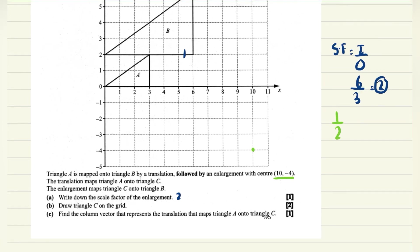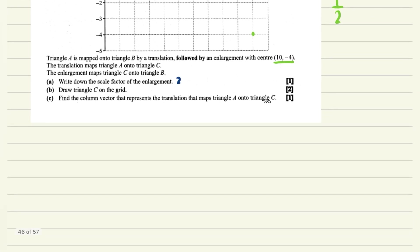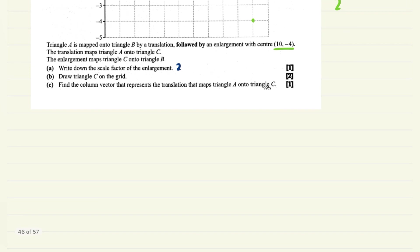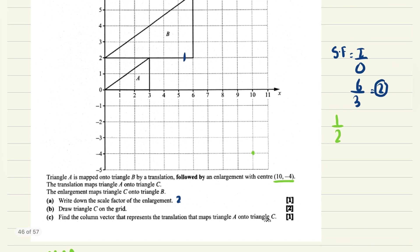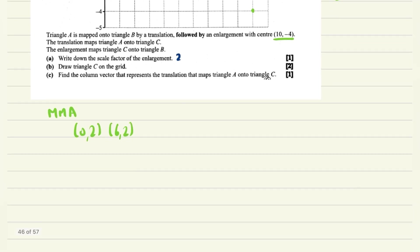Now to deal with the enlargement, we apply the MMA method: minus, multiply, and add. The object coordinates of B are (0,2), (6,2), and (6,6). The center of enlargement is (10,-4).